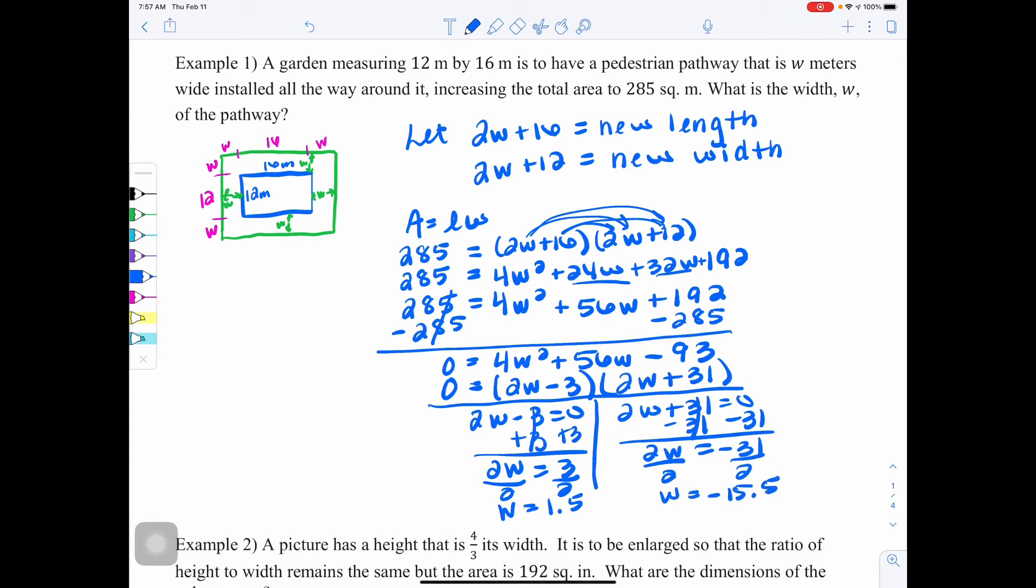Now this is a question about length and width and area, so having a negative answer does not make sense in context of this problem. So we will cross this out and write reject next to it. Now whenever you're done with all this work, you need to go back and look at the word problem. Make sure you are answering the question. It says the garden measuring 12 by 16 meters has a pathway W meters that's installed around it, which makes the area 285. What is the width W of the pathway? Well, we already found W. W was 1.5. So that's our final answer. W is equal to 1.5 meters.